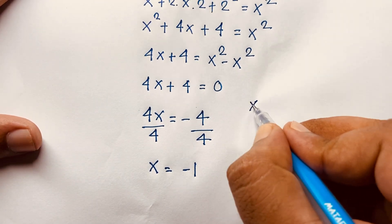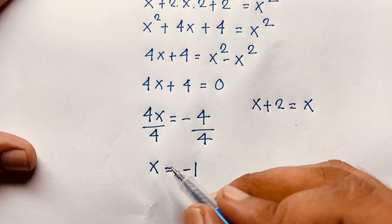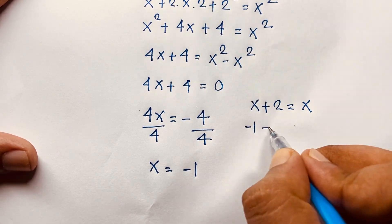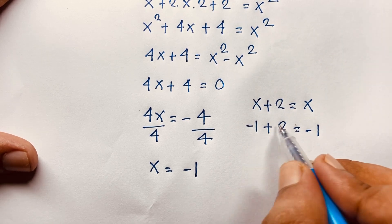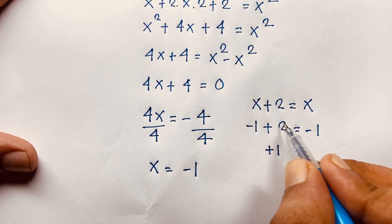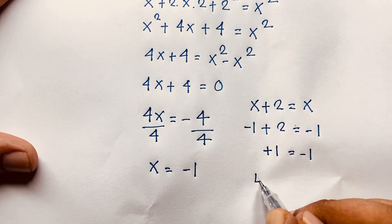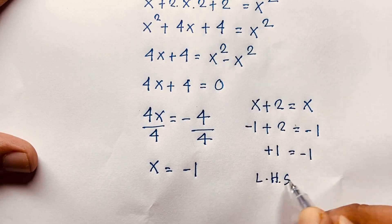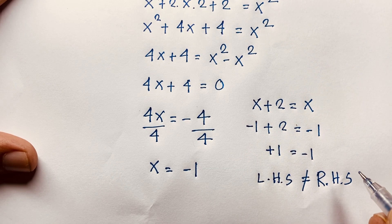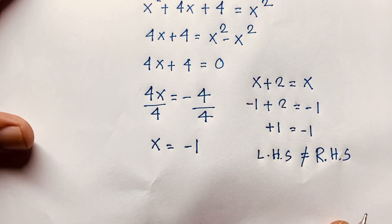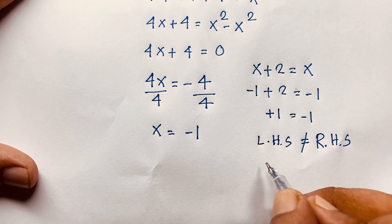Let's verify: in the original question √(x+2) = √x, substituting x = -1 gives √(-1+2) = √(-1), which is √1 = √(-1), so the left-hand side is positive 1 but the right-hand side is √(-1), which is not real. Left-hand side and right-hand side are not equal, so this solution is rejected — no real solution.